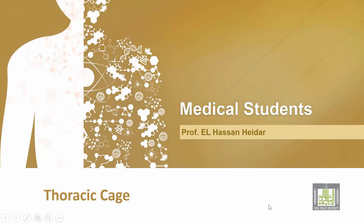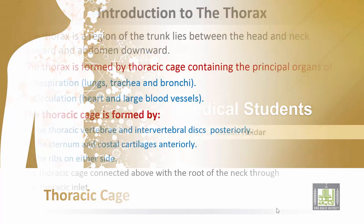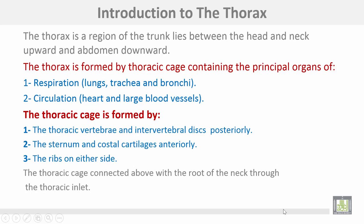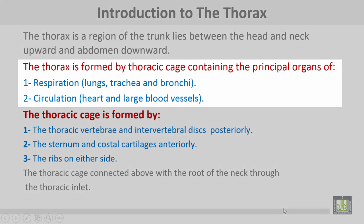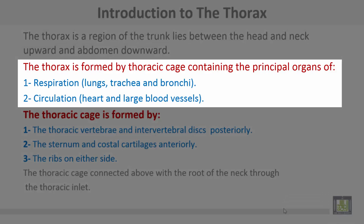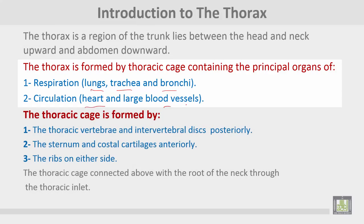Thoracic cage. The thorax is a region of the trunk situated between the head and neck upward and the abdomen downward. The thorax is formed by the thoracic cage containing the principal organs of respiration — lungs, trachea, and bronchi — and circulation, including the heart and large blood vessels.